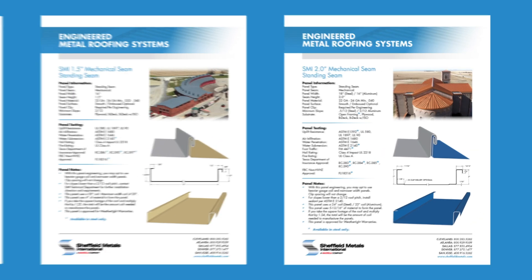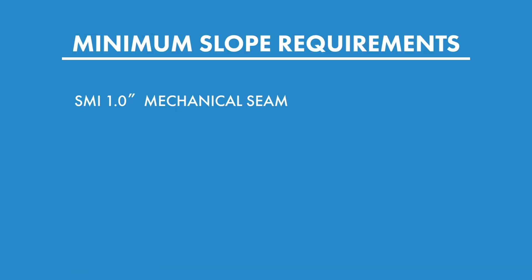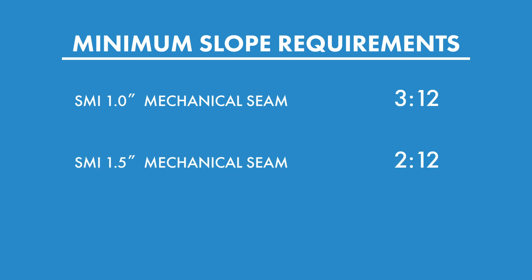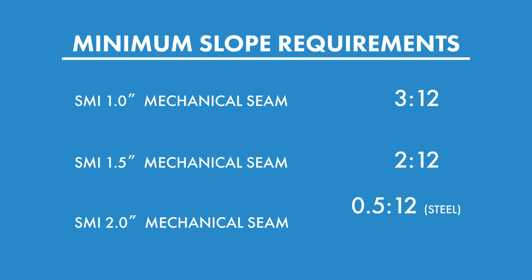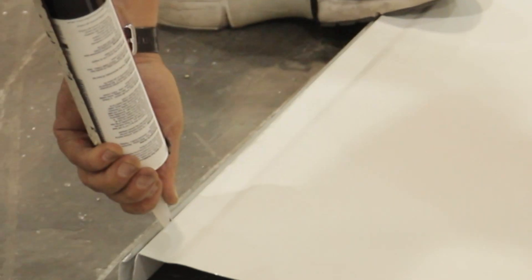The one and a half inch and two inch mechanically seamed profiles from Sheffield Metals come with engineering and have been tested in a laboratory. The one inch mechanical seam has a minimum slope requirement of 3/12. The inch and a half mechanical seam has a minimum slope requirement of 2/12. The two inch mechanical seam has a minimum slope requirement of a half 12 for steel and 2/12 for aluminum. If this profile is installed below a 2/12, you must use sealant per ASTM E2140.